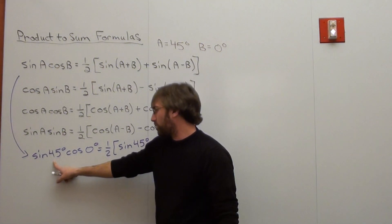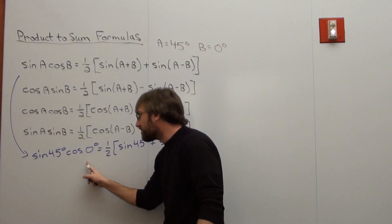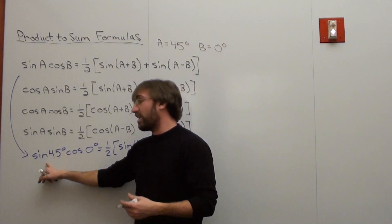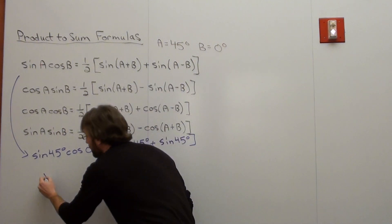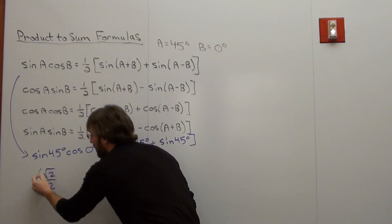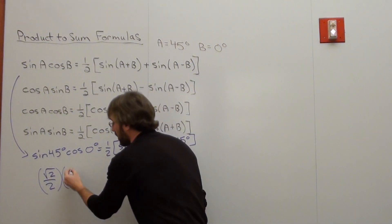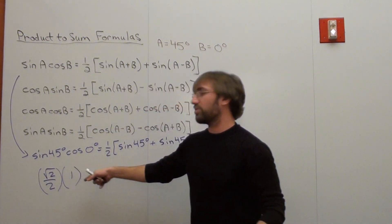I want to figure out what the sine of 45 degrees is times the cosine of zero degrees. Let's figure it out. The sine of 45 degrees is root 2 over 2. The cosine of zero degrees is not zero, it's 1. So my answer is going to be root 2 over 2.